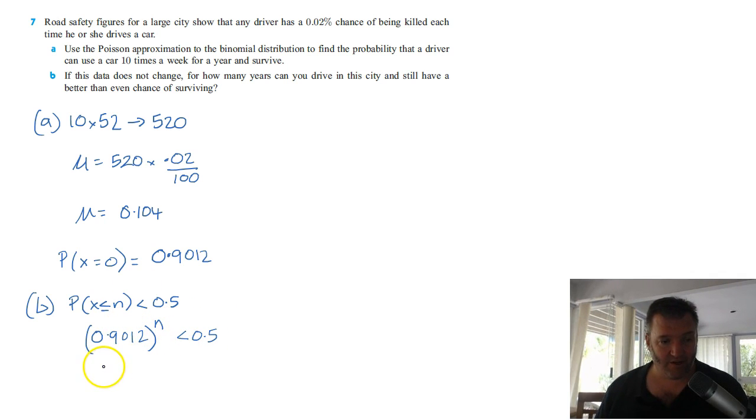So I rearrange this, do the log of each side, and I've got N log 0.9012 is less than the log of 0.5. And we're going to end up with N. Now, I'm going to write the greater than here, because I think you're going to remember that the log of 1 is 0. So the log of a number between 0 and 1, 0.9012 is going to be a negative. So what I've done there is I've divided by a negative number, haven't I? Multiply by a negative reciprocal, whichever way you want to think of it. So N is going to need to be greater than the answer to that.